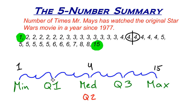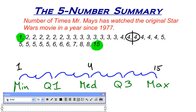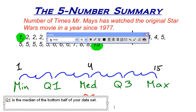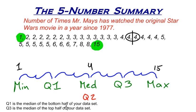Now let's find the quartiles. The first quartile is the median of the bottom half of your data set — Q1 is the median of the bottom half. And to go along with that, Q3 is the median of the top half of your data set. That's how you find the first and the third quartiles.